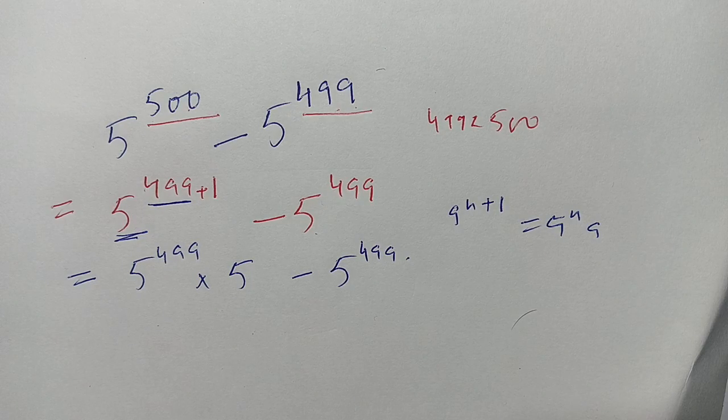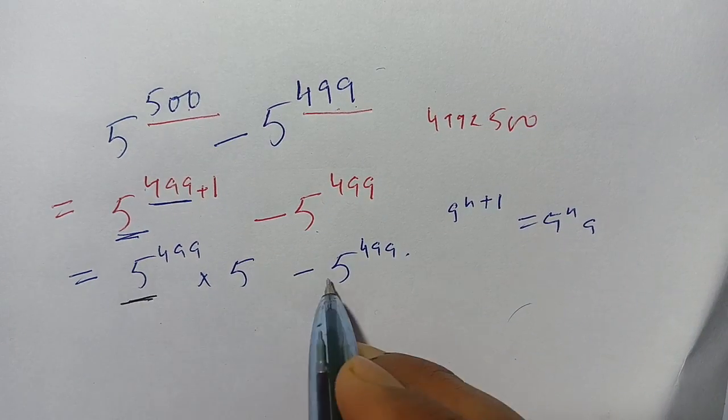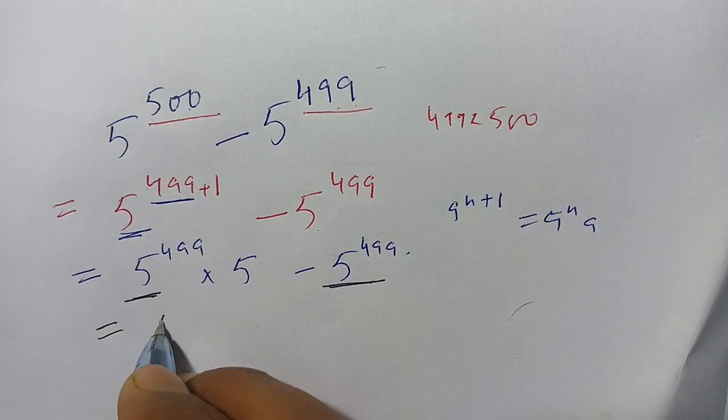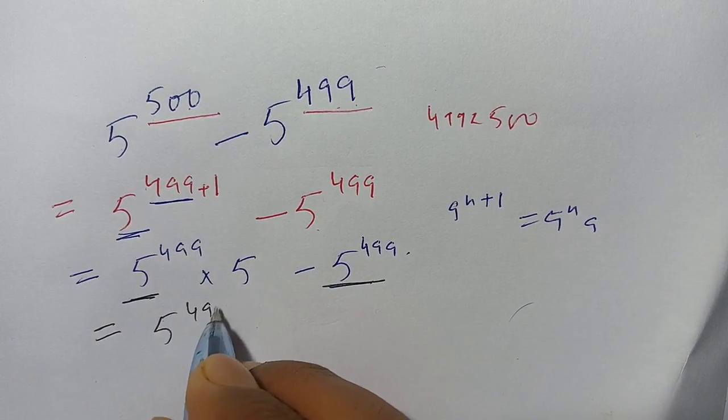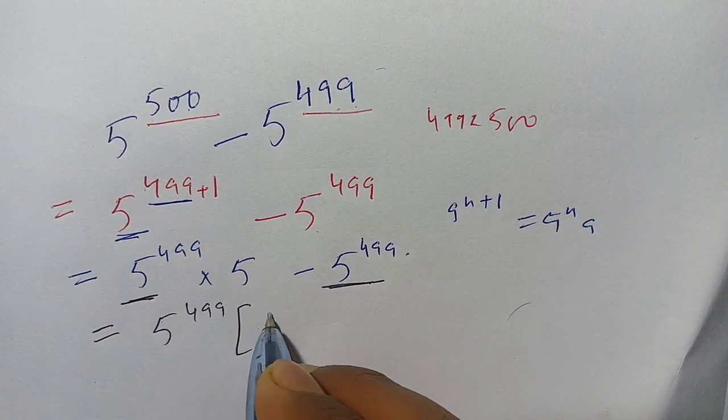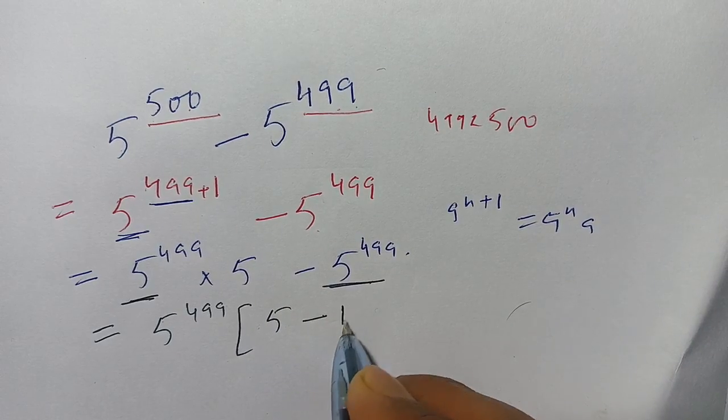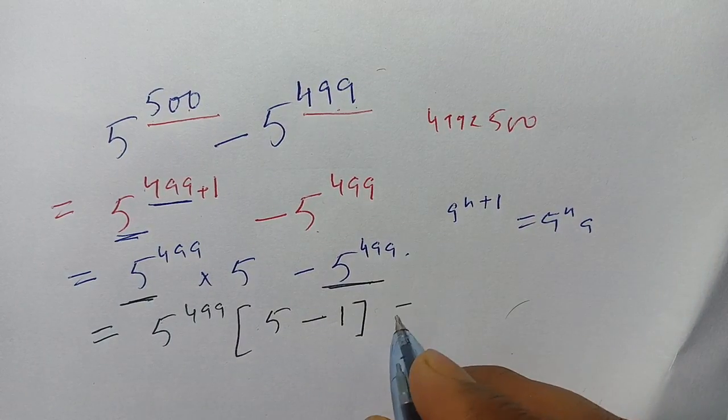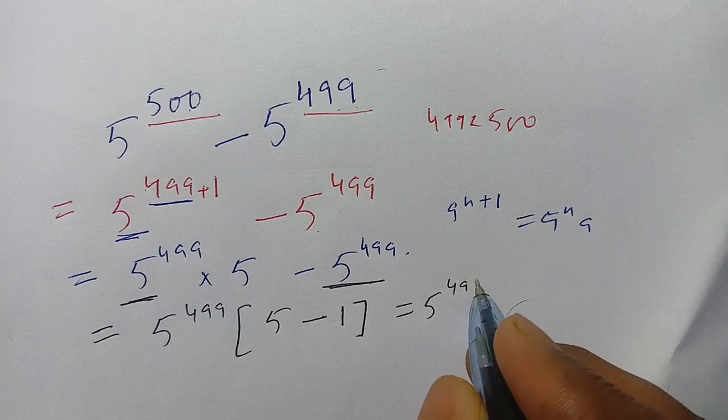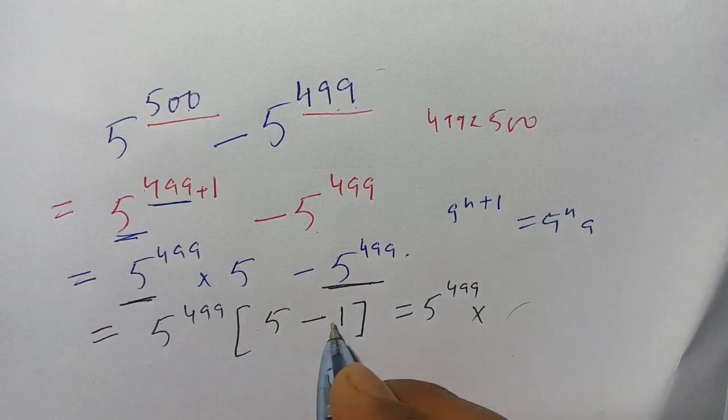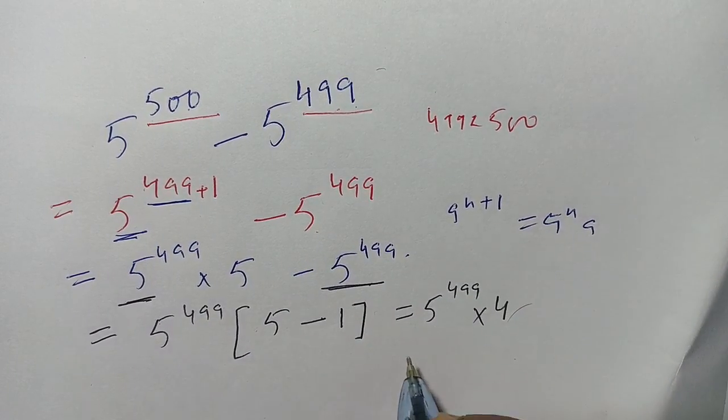We get 5 power 499, and the remaining is 5 minus 1. We get 5 power 499 times 5 minus 1, which becomes 4. This becomes 4 times 5 power 499. This is the simplest way of this exponential problem.